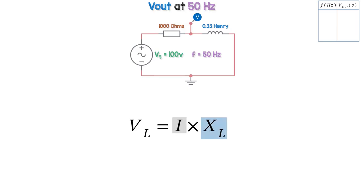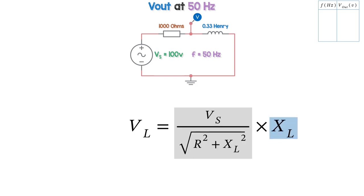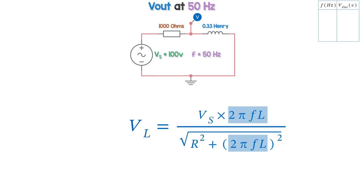Instead of working every formula out individually to eventually find Vl, I prefer to make one formula by combining the others together. So the output voltage is current times inductive reactance. Substitute supply voltage divided by impedance for the current I. Substitute the impedance formula for Z. Tidy up the numerator a bit. Substitute 2πFL for XL and then we're done.